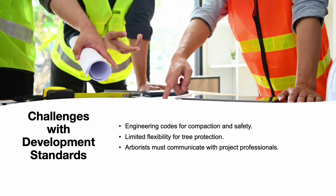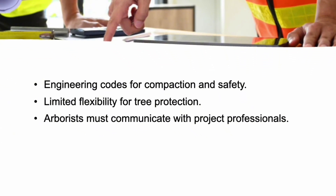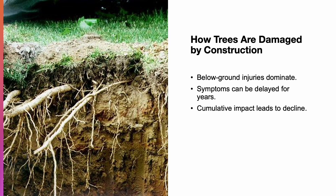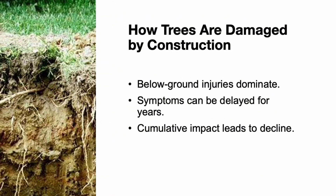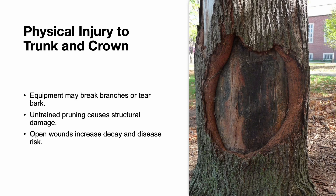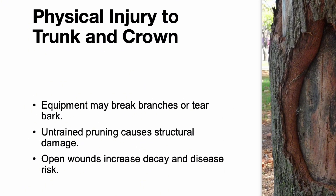Construction requires standards for compaction, foundation depth, and utility placement. While flexibility is limited, arborists must understand these requirements to advocate for trees in collaboration with engineers and designers. Unfortunately, construction damage often goes unseen. A lot of the time it will affect the roots underground, and above-ground symptoms like reduced growth or dieback might not show up for years. These impacts can send a tree into irreversible decline. Equipment can easily damage branches or bark, and improper pruning or accidental injury introduces decay and weakens tree structure. These wounds are permanent and can shorten the tree's life.